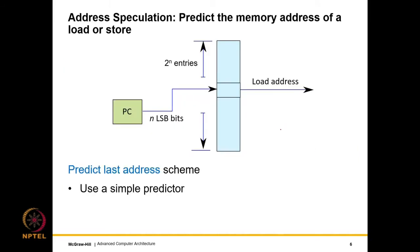Let's look at address speculation. This predictor diagram is very similar to what we saw for branch prediction — it is a generic predictor structure. For a given memory address, to predict the address of a load or store, we use the N least significant bits to access a table of 2^N entries. Where there is a hit and a match, we get an address which we use as the load address. Since loads are on the critical path, we typically do prediction for loads.